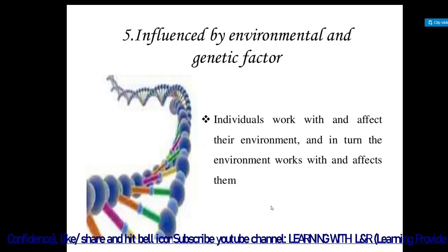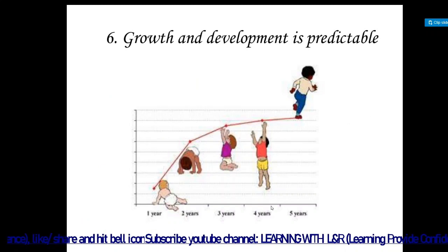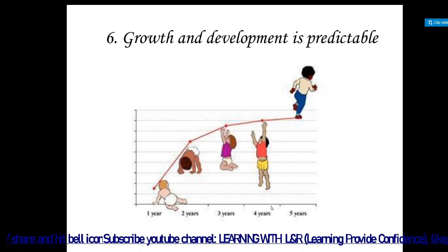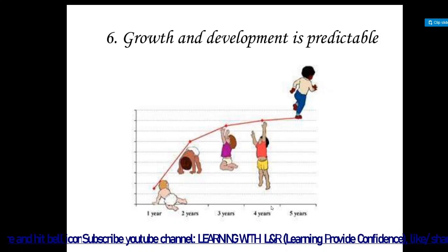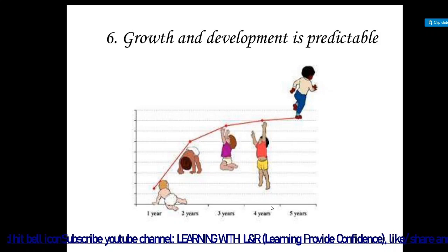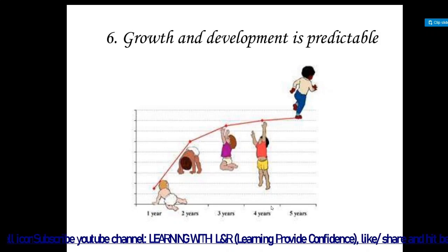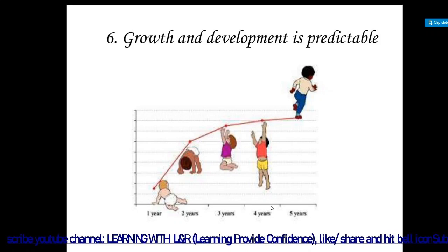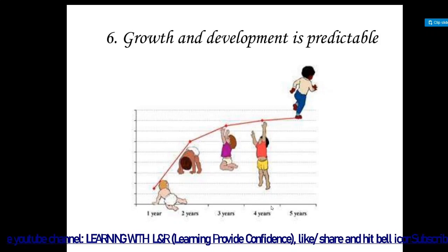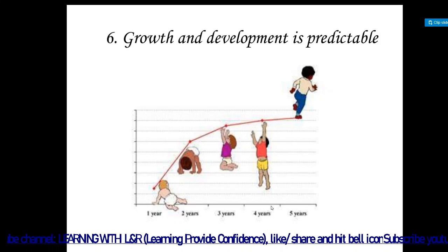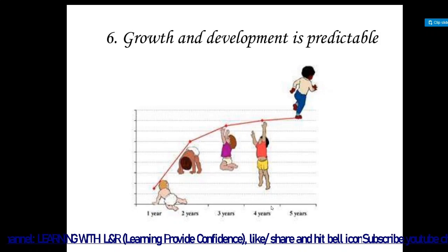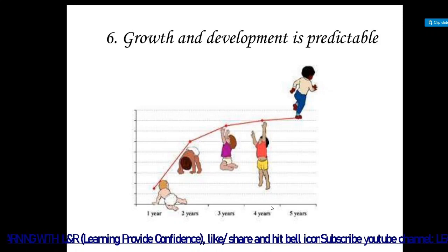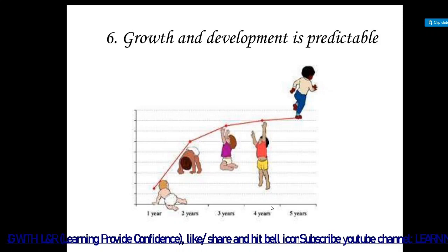Individuals work with and affect their environment, and in turn the environment works with and affects them. Growth and development is also predictable. For example, when a child is born with a weight of 2.5 kilograms, we know that by five or six months the weight will double. It is predictable — we learn from books what kind of growth and development is expected, and we can use this to judge whether a child's growth is normal or abnormal.